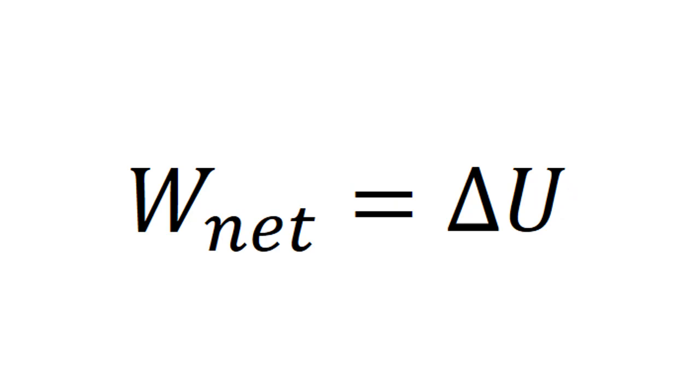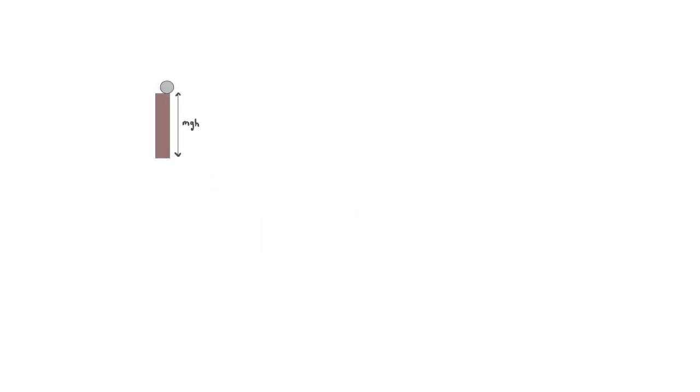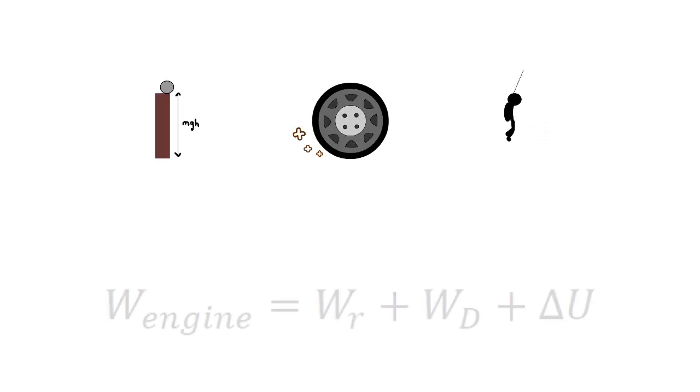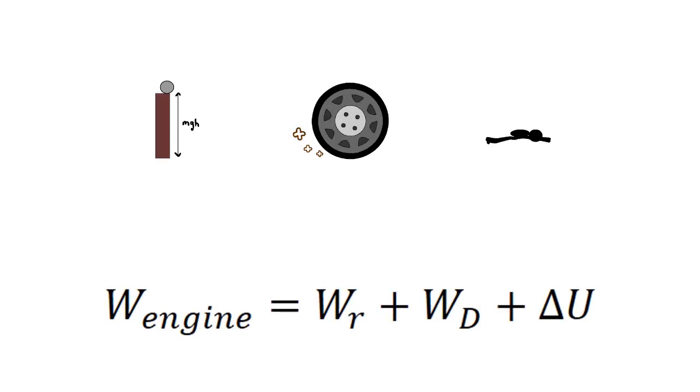Now let's break down what the net work is and what it is composed of. Going back to the question, we are interested in an engine that can compensate for elevation gain, rolling friction, and air drag. This means that the work done by the engine must overcome the potential energy, the energy lost by rolling friction and the energy lost by air drag. To put this into a formula, it looks like this: W engine is equal to WR plus WD plus delta U.